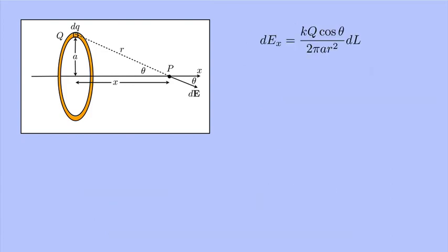Okay, so here's our formula for dE, the x component. So, the x component of the electric field is the integral of this. Well, everything that was in front of the dl is a constant. That can be pulled outside the integral. So, I get k q cosine theta over 2 pi a r squared times the integral from 0 to 2 pi a of dl.